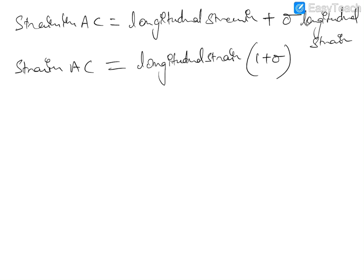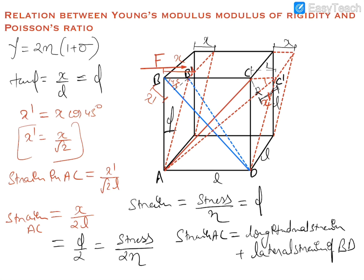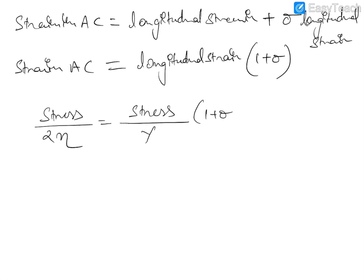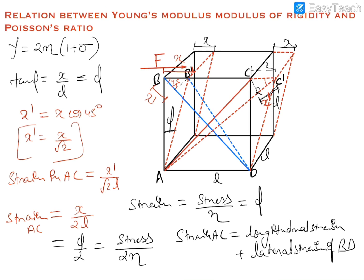We already calculated that the total strain in AC equals stress upon 2 eta. This also equals stress upon gamma, i.e., Young's modulus. Cancelling stress on both sides, gamma equals 2 eta times (1 + sigma). This is the required relationship: E = 2η(1 + σ).